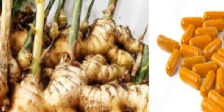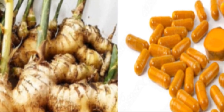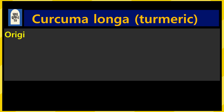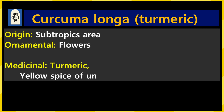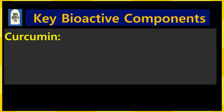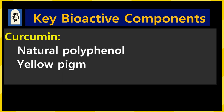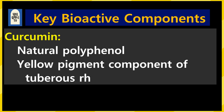The origin is tropical areas. The flowers are beautiful, so it is also used for ornamental purposes. Its scientific name is Curcuma longa, though the name turmeric is better known. Turmeric is a tuber, and it is also the name given to the yellow spice ingredient. The main active ingredient is curcumin, belonging to the class of natural polyphenols — it is the yellow pigment of the tuber rhizome.